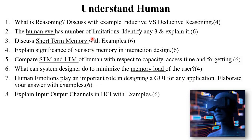The next important topic is Understanding Human. On this topic they will ask: what is reasoning? Discuss with examples inductive vs deductive reasoning for 4 marks. You have to explain the definition of reasoning and explain their types with examples. The next question is: the human eye has a number of limitations — identify any 3 and explain them with examples for 6 marks.